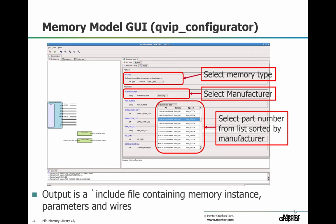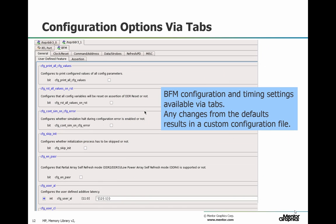Here's our memory configurator software. The normal use is very simple: you select the memory type, you select the manufacturer, and then you select the part number. Then you press a button and it outputs a single file with everything you need to integrate our memory model into your test bench. For many applications, the out-of-the-box device model is fine. But if you want to vary any of the values in the configuration, you can change them and output a custom configuration file, which is then used to configure the memory model.